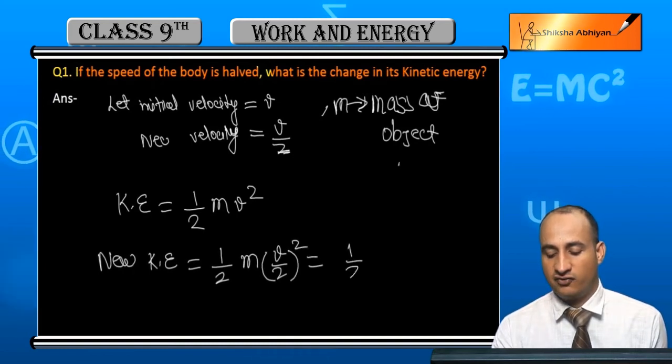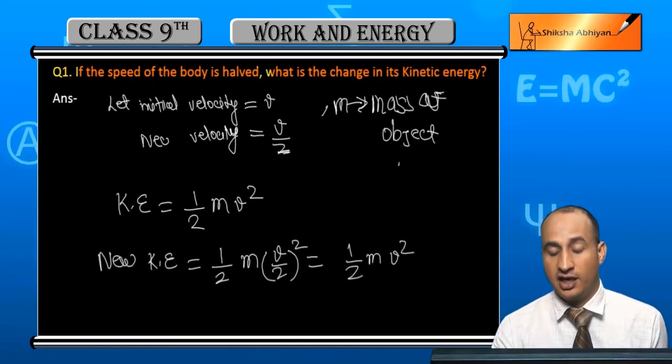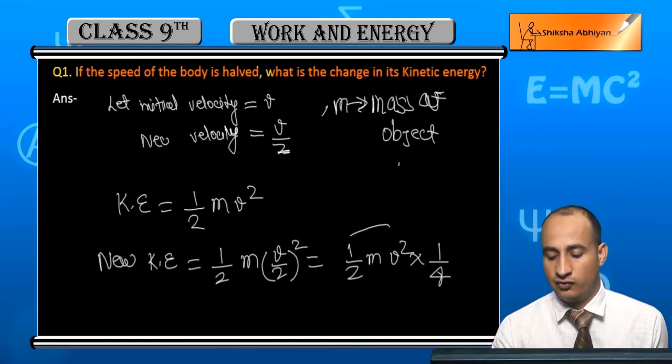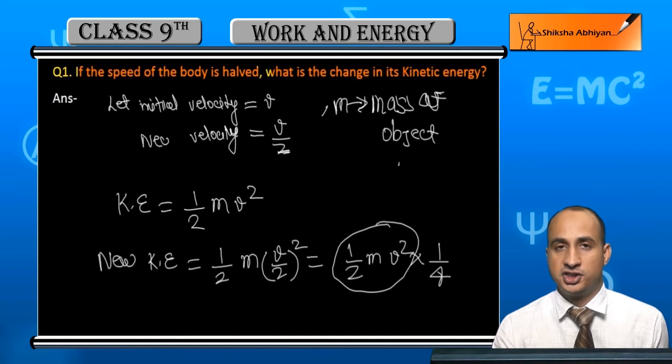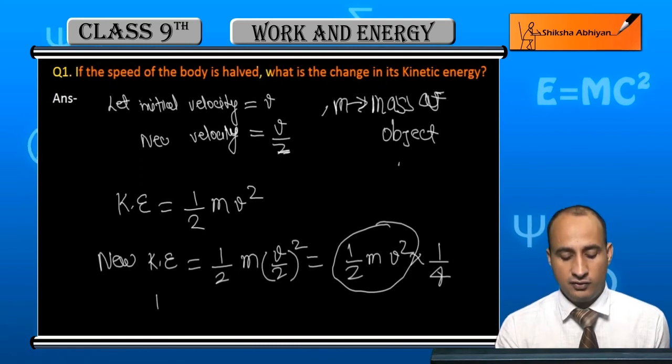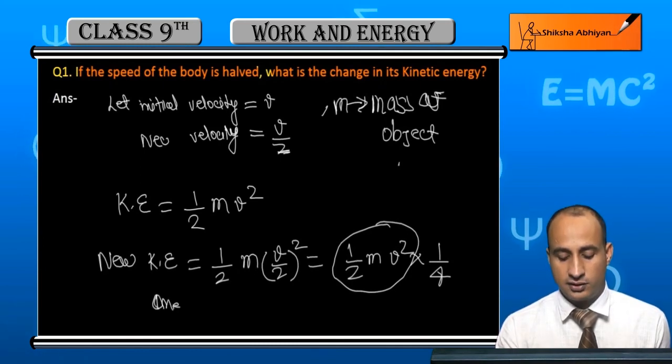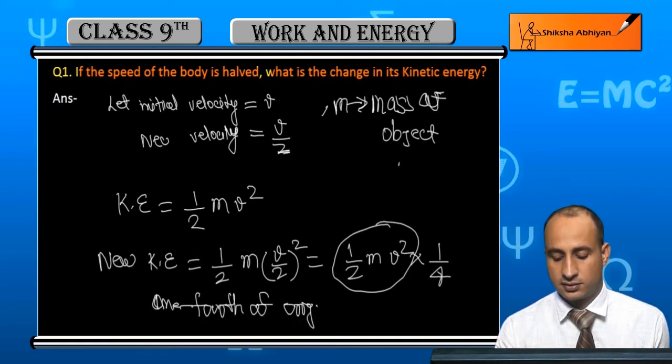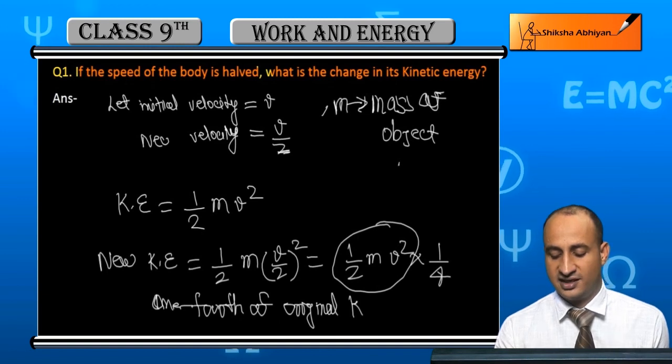This equals 1/2 mv² times 1/4. When we square 1/2, we get 1/4. So the new kinetic energy is 1/4th of the original kinetic energy.